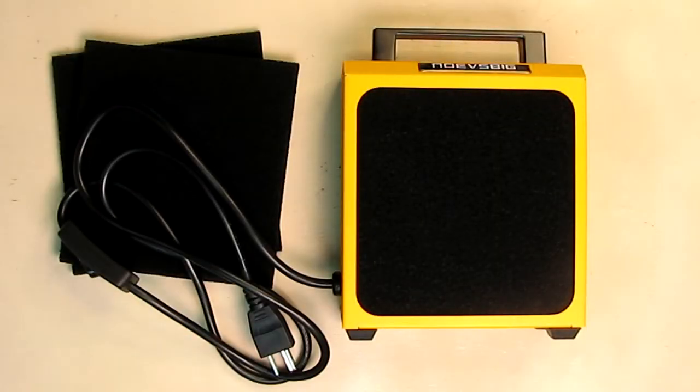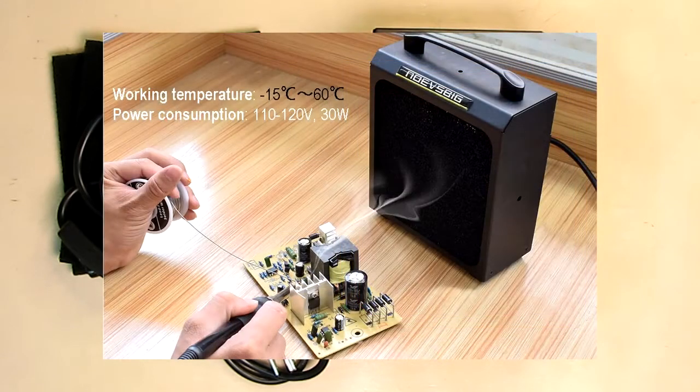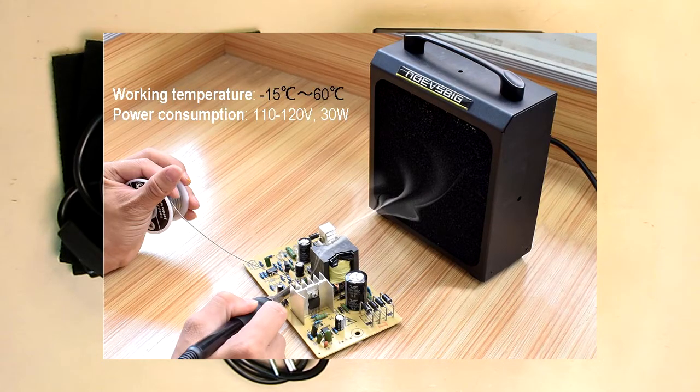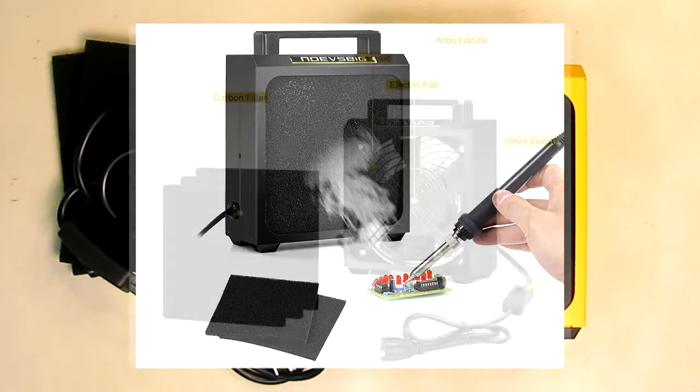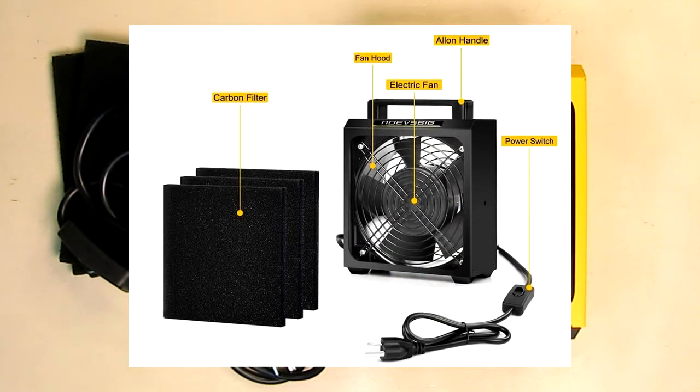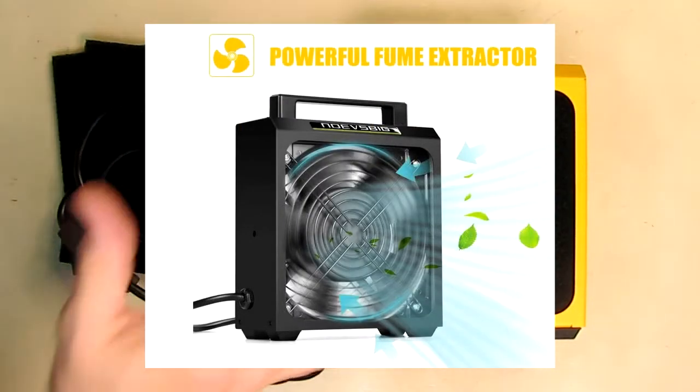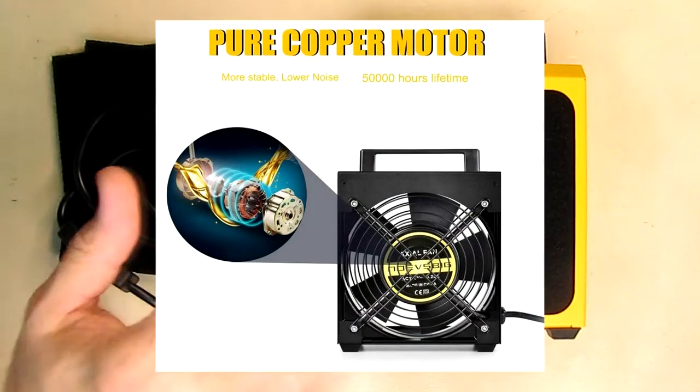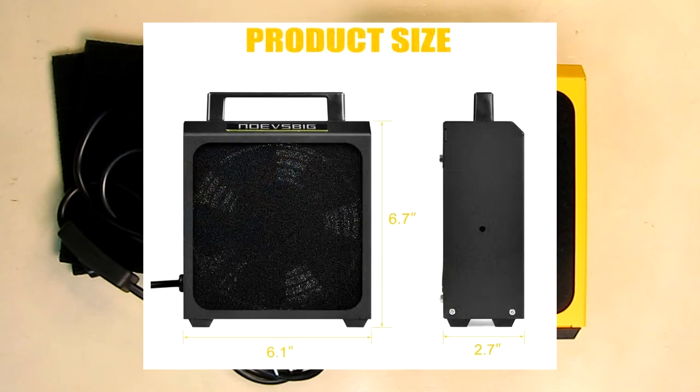This is my video review of the NOEV SBIG brand solder smoke absorber remover fume extractor. This device extracts fumes while you're soldering or mixing epoxies, and even absorbs the scent of instant glue, keeping the fumes from your lungs.